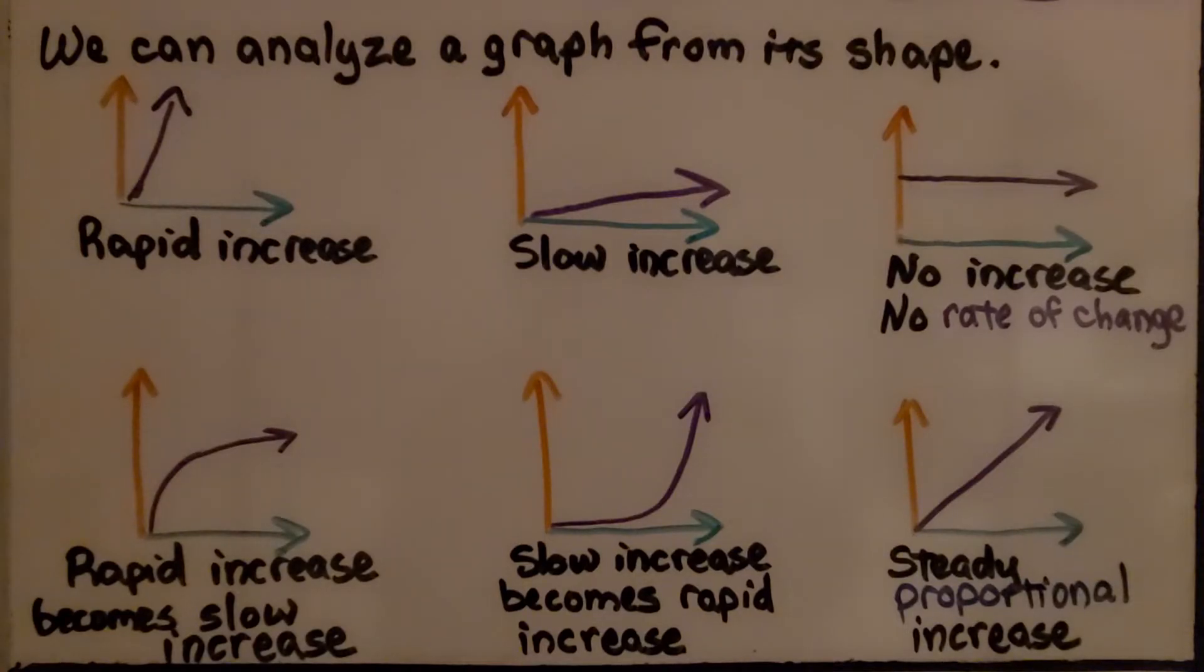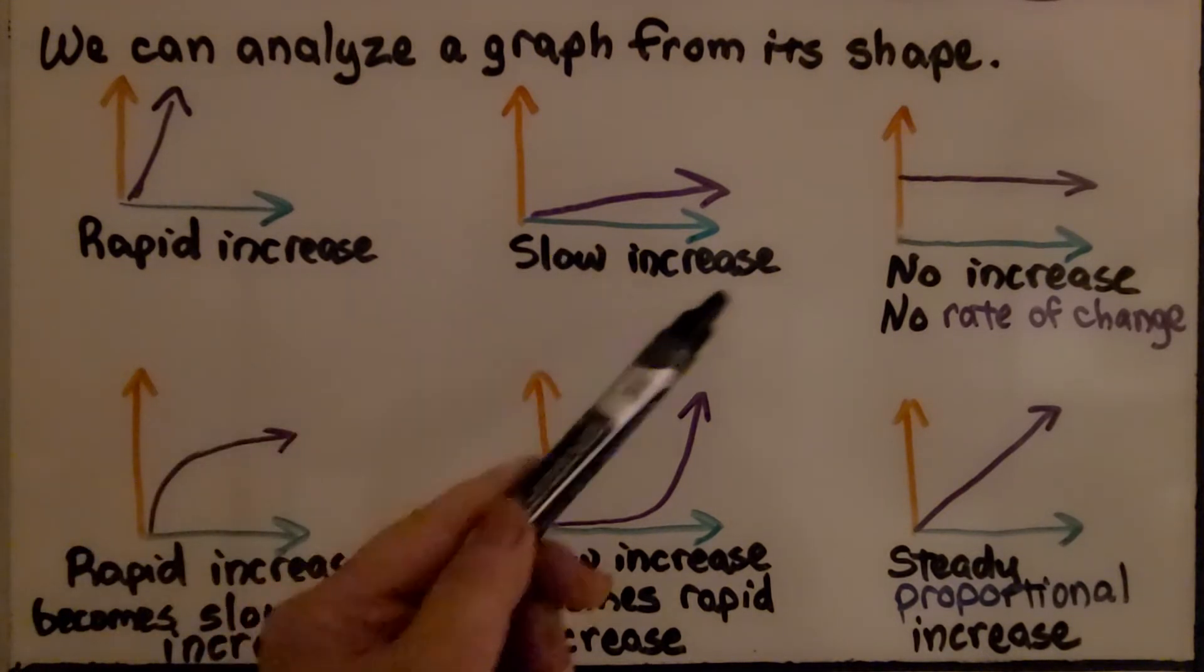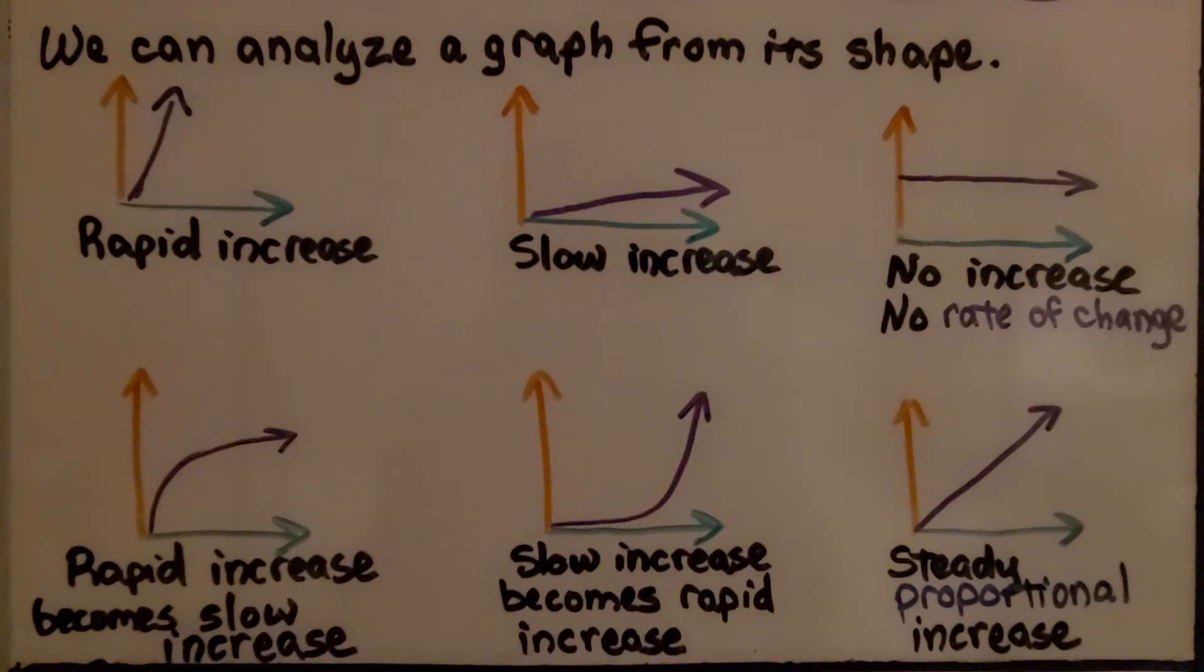As we learned in the previous video, we can analyze a graph from its shape. We can tell if there's a rapid increase, a slow increase, or no increase with no rate of change. We can identify if there's a rapid increase that becomes slow, a slow increase that becomes rapid, or a steady proportional increase.